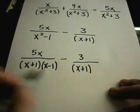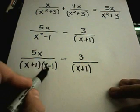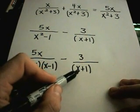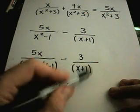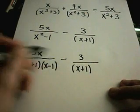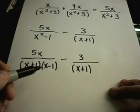In the bottom of this fraction, on the left side, I see x plus 1, x minus 1. On the right side, I only have an x plus 1. So everything that's in the bottom of the right one, I already have in the bottom of the left one. So I'm not going to have to do anything to the one on the left.